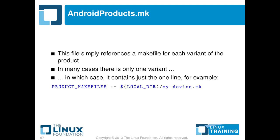The first one, at the top level, is a file called androidproducts.mk. In this example, we're just going to have a one-liner in here which references the one product we are making. So we have PRODUCT_MAKEFILES equals LOCAL_DIR/my-device.